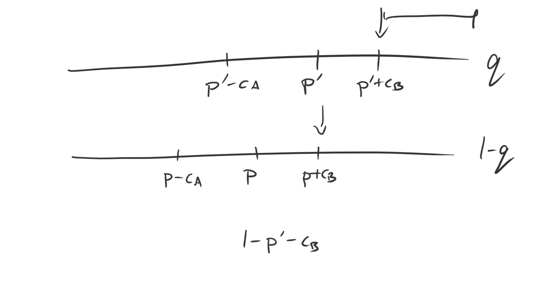In the second case, B needs this quantity here, which is 1 minus P minus CB. You'll notice that this type needs more to accept than this type does. So if A wants to guarantee the peace, A must overpay B in this circumstance because B is not as strong than it is in this circumstance.